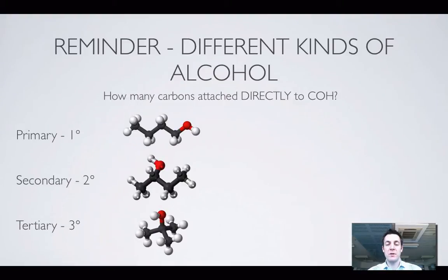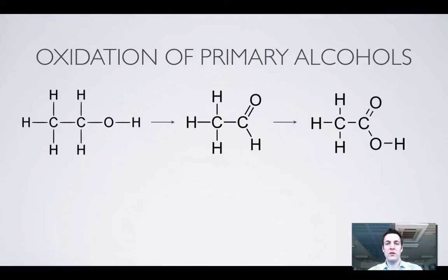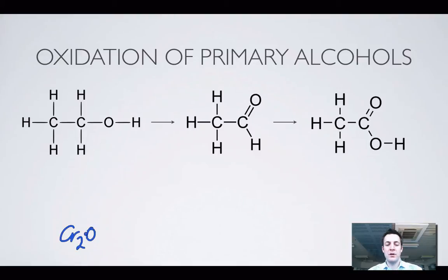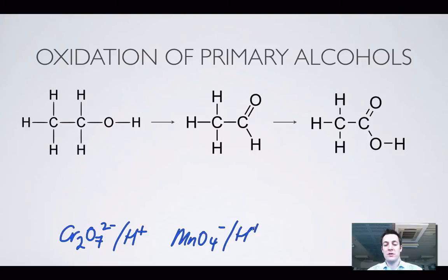That's really important to be able to identify because the different types of alcohol respond very differently to oxidising agents. We're going to look at the primary alcohols, but first let's remind ourselves of a couple of common oxidising agents. Dichromate in acidic conditions would be one, and permanganate would be another, which can be used in acidic or basic conditions, but we'll only worry about the acidic ones. These are the two commonly seen oxidising agents when it comes to oxidising organic compounds.